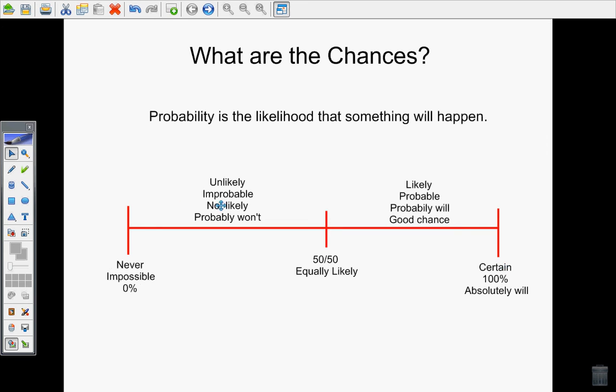Now, very few things in life will absolutely never happen or 100% always happen. Most things are possible and fall somewhere along here on our number line. If there's an equal chance of it happening or not happening, we would call it 50-50, or it's equally likely that it will or will not happen.